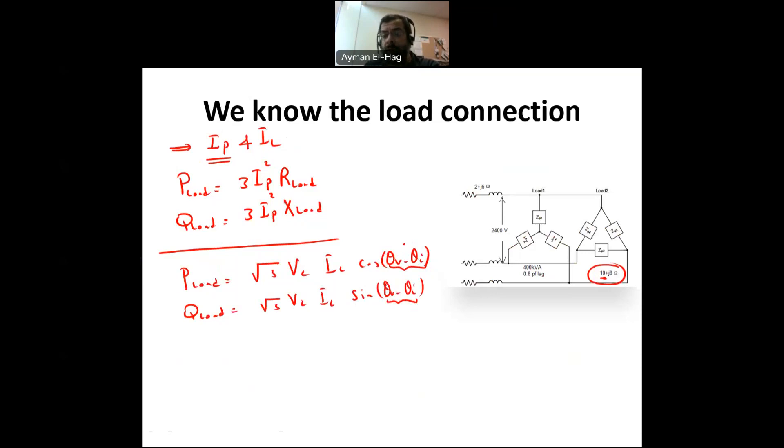But you have to know that this theta is for the phase. So basically, theta V minus theta I is equal to your theta Z, the angle of the impedance. So that will avoid any confusion that you might have when adding plus 30, minus 30 between the line and the phase quantities. Because you know Z, I can find the angle of Z. Once I know the angle of Z, this is your power factor angle.